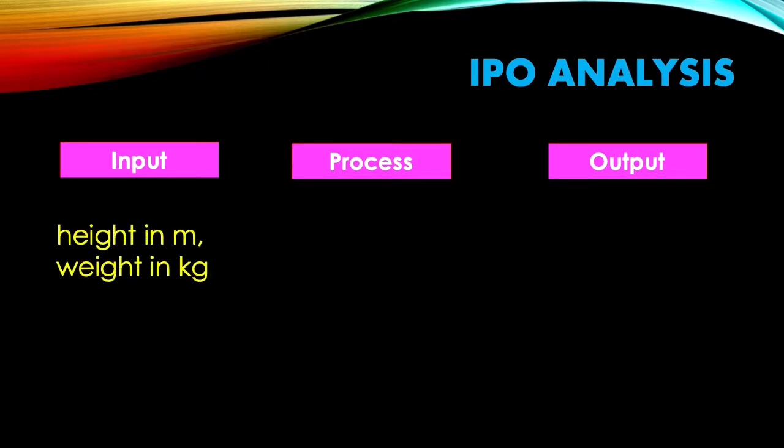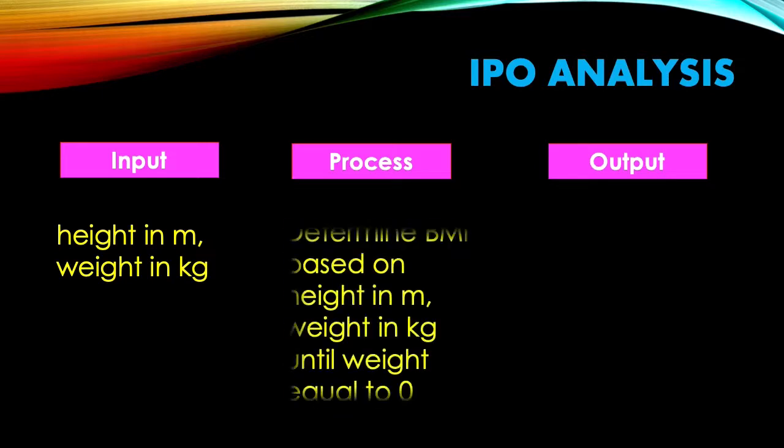The BMI inputs are height in meters and weight in kilograms. The process: determine BMI based on height in meters and weight in kilograms until weight equals zero, because it's stated that weight equal to zero exits the program.